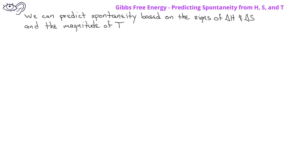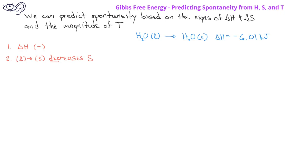Let's look at another example: the process where liquid water changes into solid water, such as when liquid water freezes. In this situation, we have an enthalpy change of negative 6.01 kilojoules, so the enthalpy change is negative. Since we're going from a liquid to a solid, we would predict that the entropy change is going to be negative or less than zero.